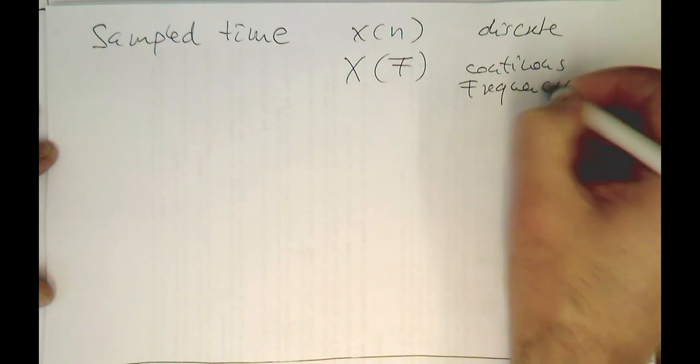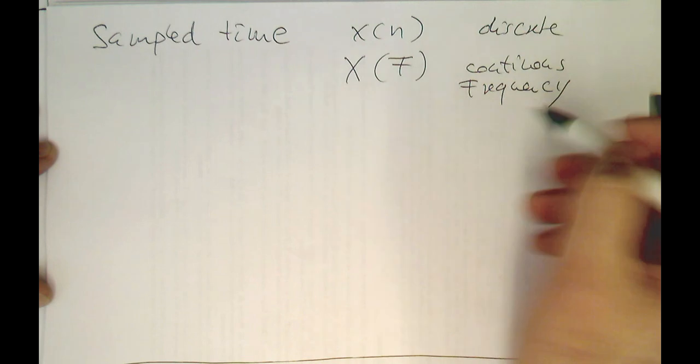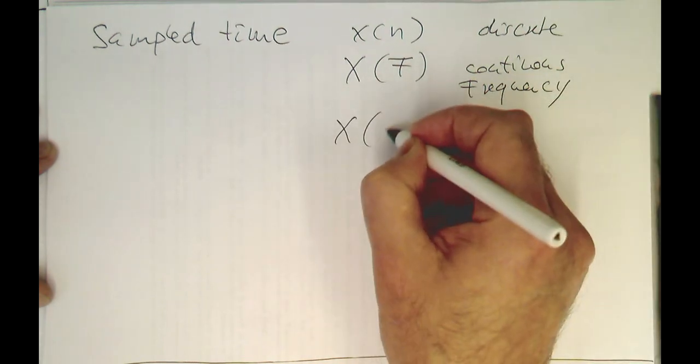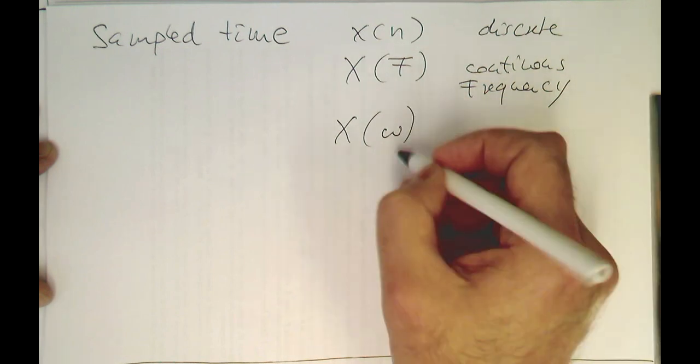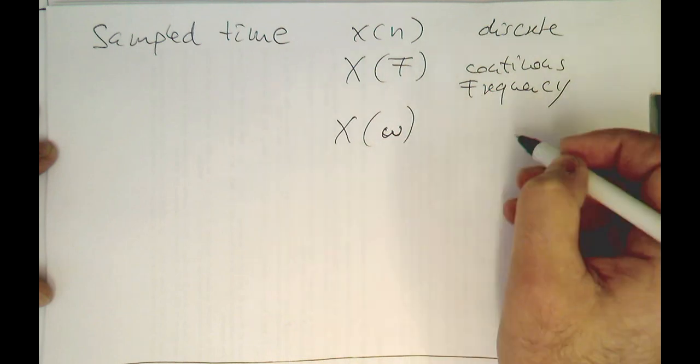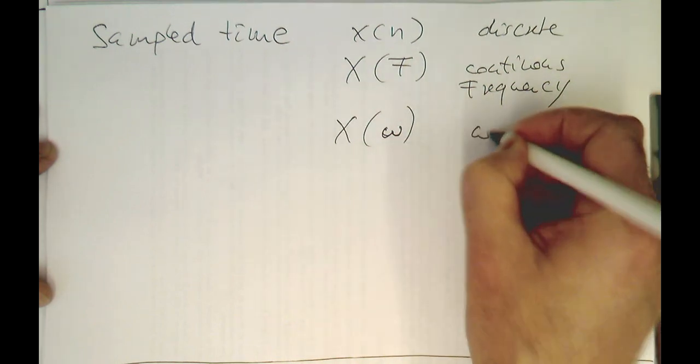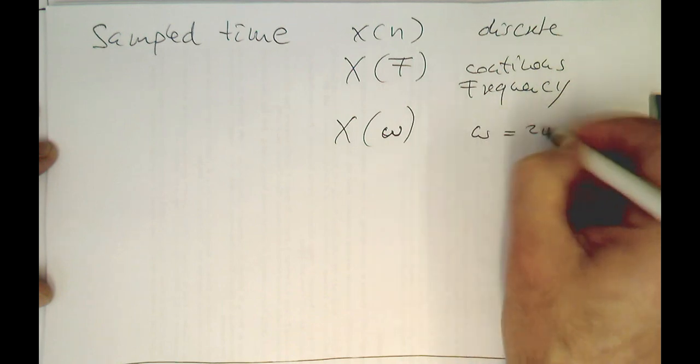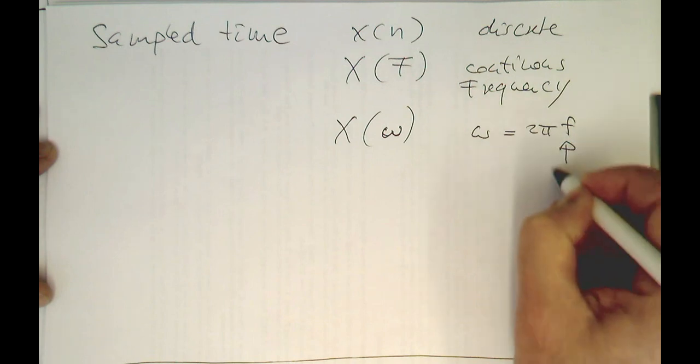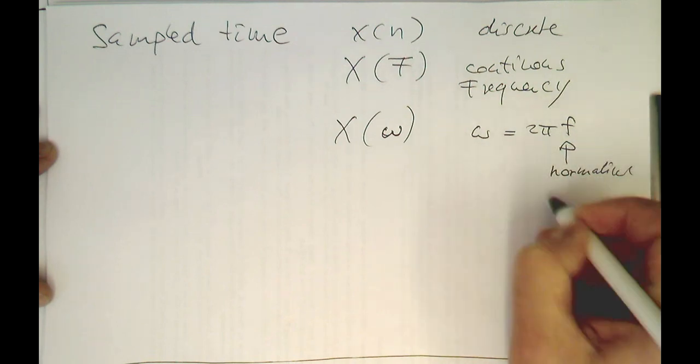This will be very useful later on for FIR filter design. It's not just an academic exercise. Very often we write just x of omega, where this is the frequency derived from the normalized frequency, and is defined as omega is 2 pi f, and that's our normalized frequency.